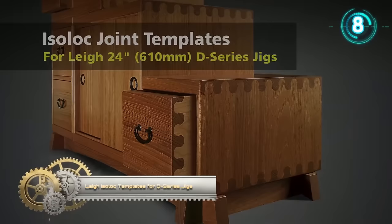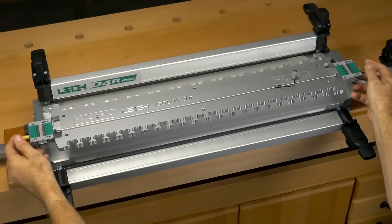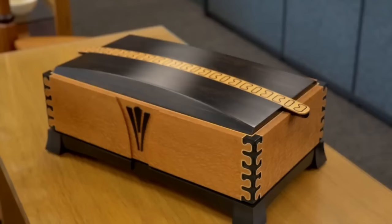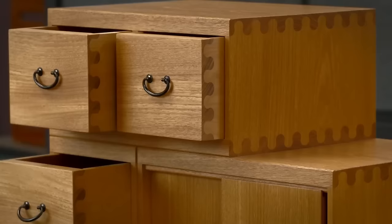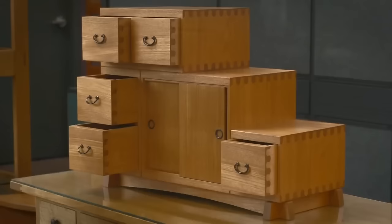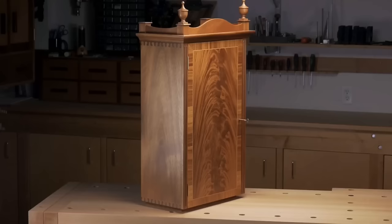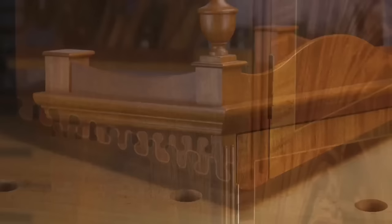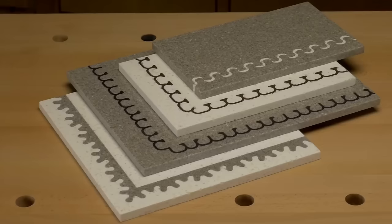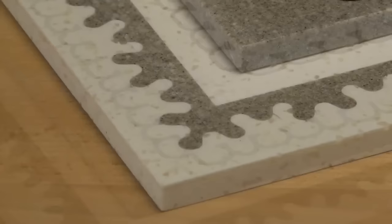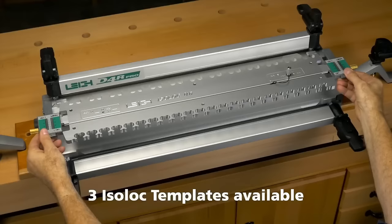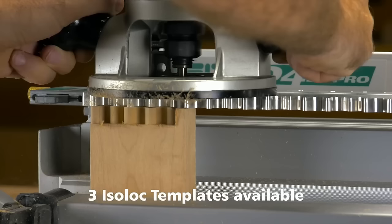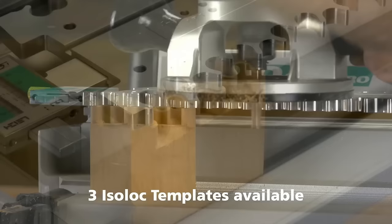Lee Isolock templates for D-Series jigs are a valuable addition to any Lee dovetail jig, expanding its capabilities by enabling the creation of unique interlocking joinery patterns. These joints are both visually appealing and exceptionally strong, suitable for a wide range of woodworking projects such as boxes, drawers, cabinets, and furniture. With various pattern options like key and mirror key, clover and bears ears, and ellipse and wave, each template boasts two meticulously CNC-machined joint patterns, all achievable using a single 8mm straight bit, preferably an upcut spiral. Using these templates is a breeze. Simply attach them to your Lee dovetail jig and follow the user-friendly manual instructions, allowing both beginners and seasoned woodworkers to produce professional-grade results effortlessly.